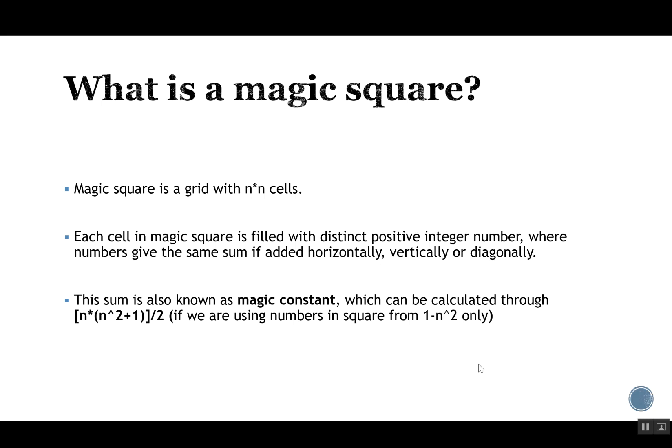This sum is also known as the magic constant — some people call it magic sum as well. It can be calculated through a formula, but with a condition: we get this sum from the formula only if we are using numbers from 1 to n² to fill the square. If we use any other set of numbers, we will get a different sum which will not match this formula.